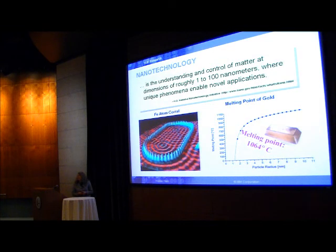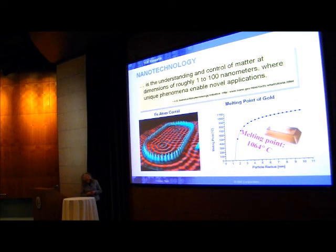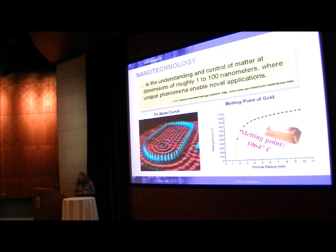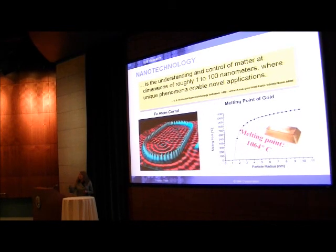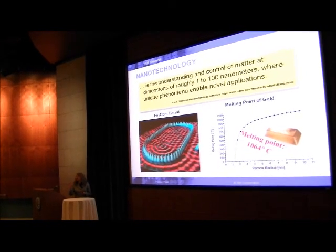First of all, I'd like to define nanotechnology for students in the audience or others who might not know. It's the understanding and control of matter at dimensions of roughly 1 to 100 nanometers, where unique phenomena enable novel applications. A nanometer is 10 to the minus 9 meters. To set the scale, one-tenth of a nanometer is 2 to 3 angstroms, which is the spacing of atoms. This is only 10 times bigger than the actual size of atoms, so it's a very small length scale.